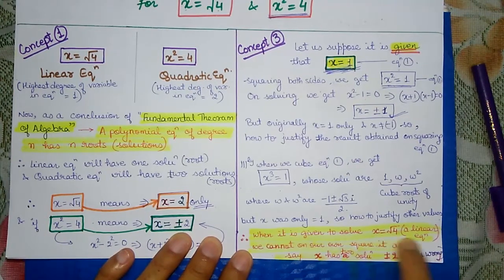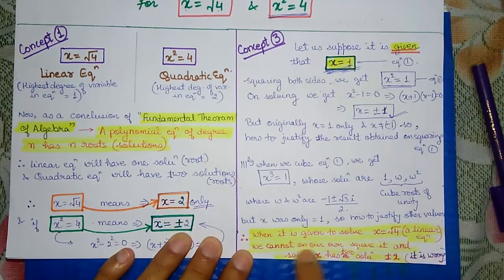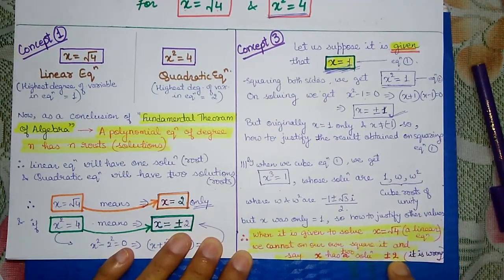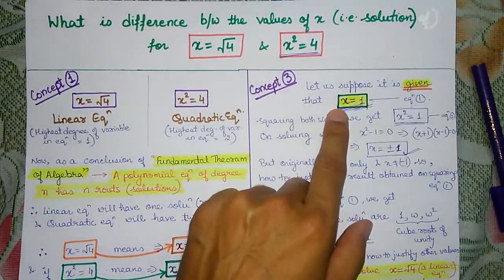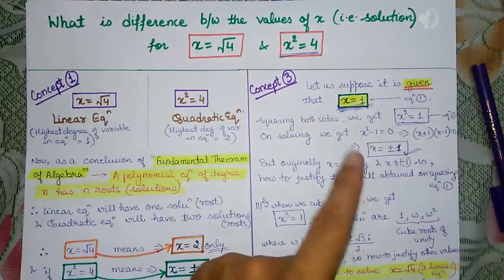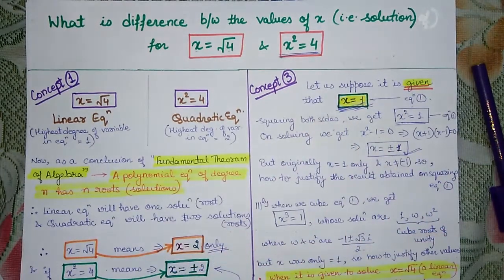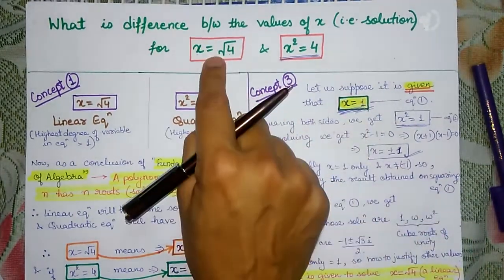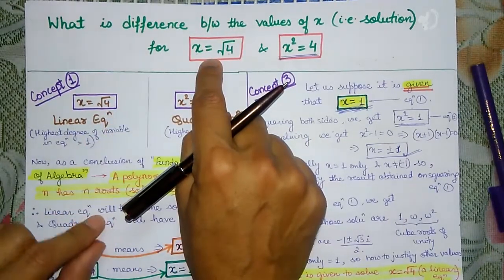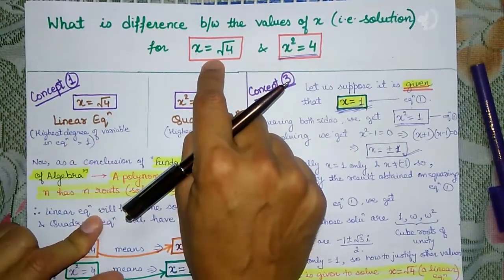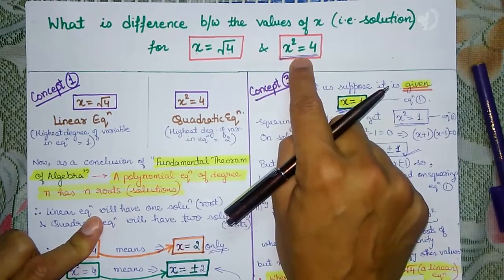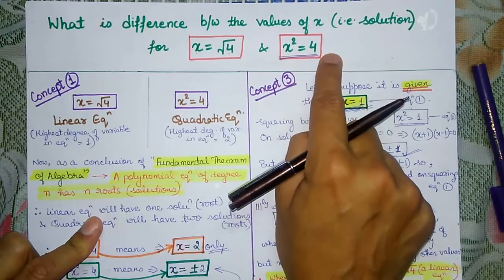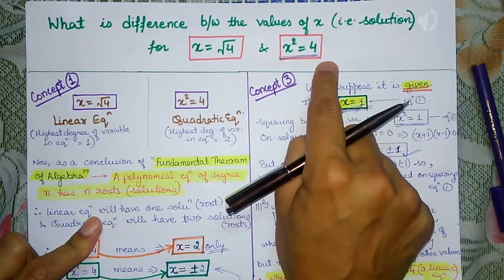Therefore this is the third proof: when a linear equation is given, it must have only one solution — x is equal to 2. If a quadratic equation is given, then you can have two solutions: x equals 2 and x equals minus 2. So what is the square root of 4? You say square root of 4 is plus minus 2. But what is the value of root 4 written as a symbol? The answer is 2.